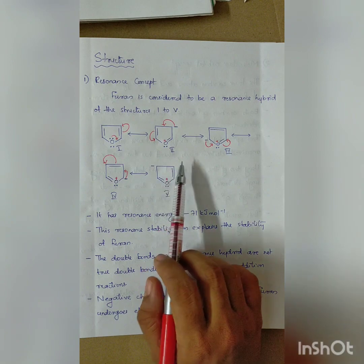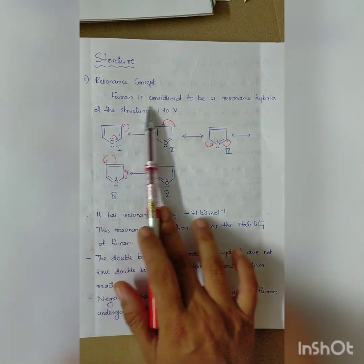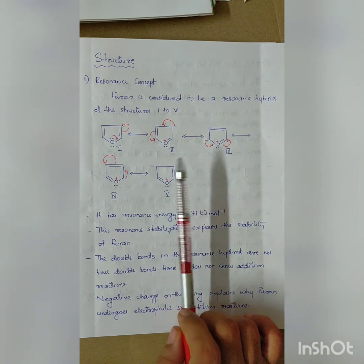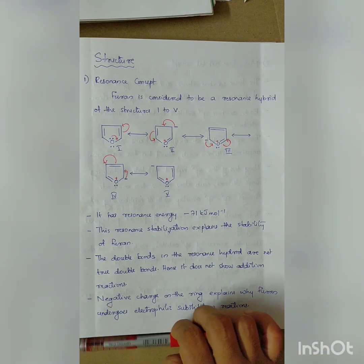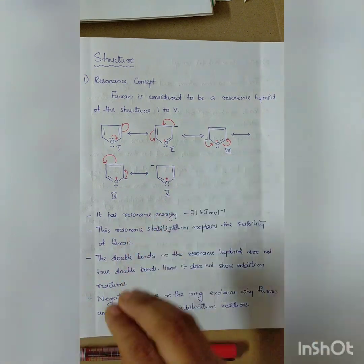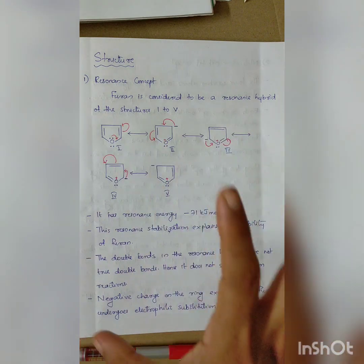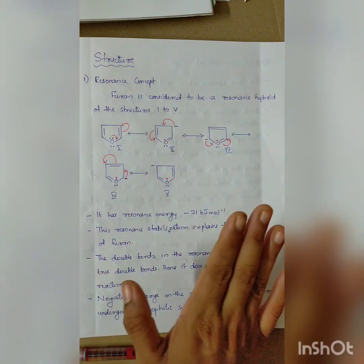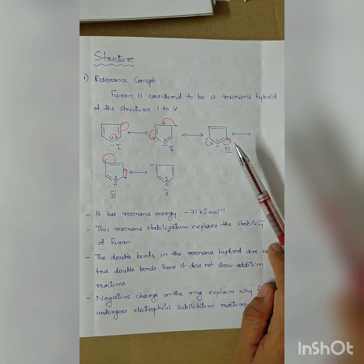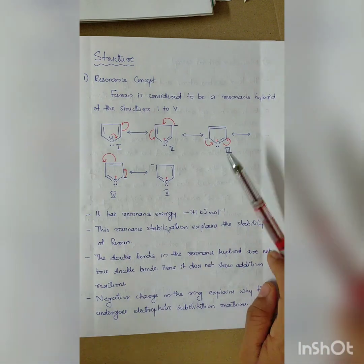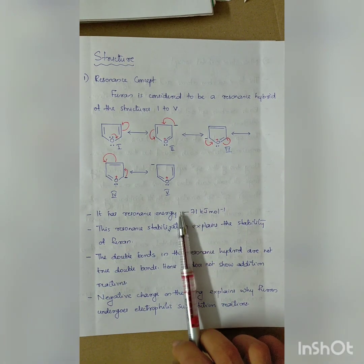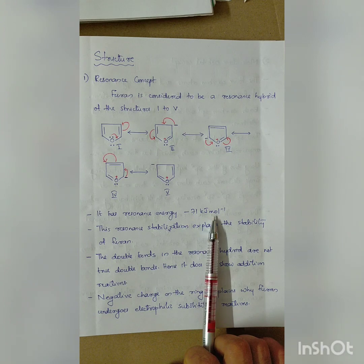These 5 resonance structures are equivalent and the actual structure of Furan is a resonance hybrid of all five. The resonance energy of Furan is -71 kJ per mol, indicating significant resonance stabilization.